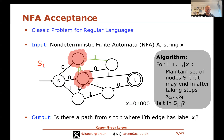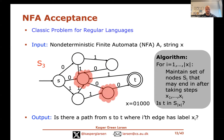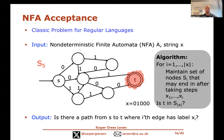You then compute S_2 from S_1: the second character is 1, so you follow all the 1-edges leaving S_1, yielding two new nodes. The third character is 0, giving S_3 from those two nodes. The fourth character is 0 giving S_4. Finally the last step yields just the node t, and we ask: is the accept node in the final set? Indeed it is, so we accept the string x.